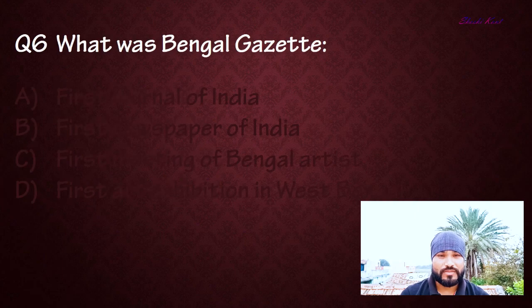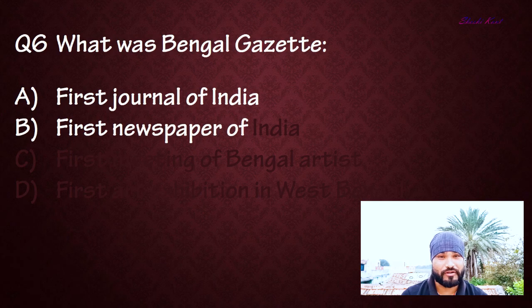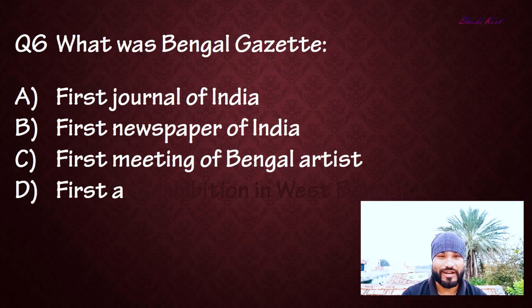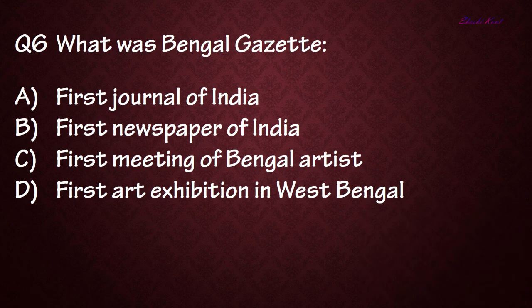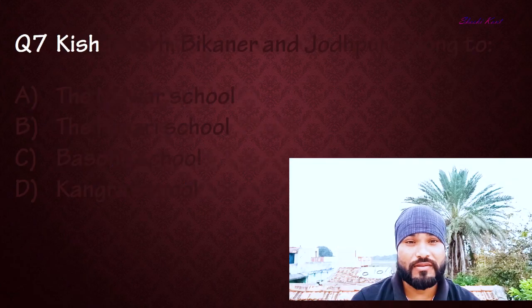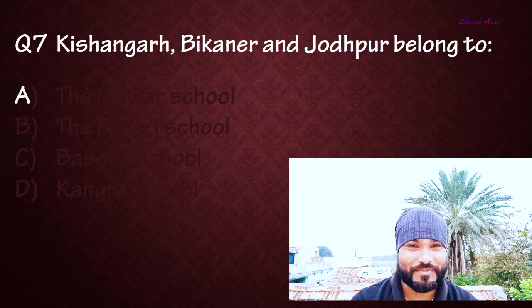Question number six: What was the Bengal Gazette? Option A: First journal of India, Option B: First newspaper of India, Option C: First art magazine, Option D: First exhibition in West Bengal. The correct answer is Option B: First newspaper in India.